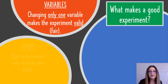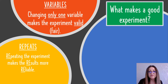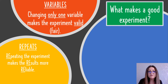The second thing that's really important with an experiment is you've got to repeat it. If you don't repeat the experiment, how do you know you've got good results? If you repeat an experiment ten times and get the same results, then you can be pretty sure that your experiment is quite reliable. You repeat the experiment to make the results more reliable.